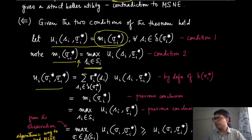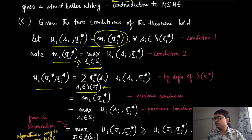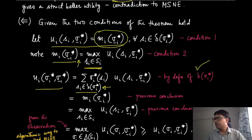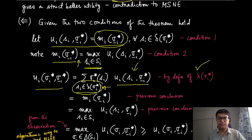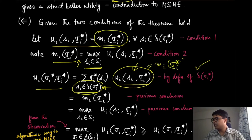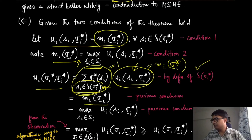We write the utility of (σᵢ*, σ₋ᵢ*) as a weighted sum over strategies in the support of σᵢ*, since for all other strategies σᵢ* assigns zero mass. Since all the utility values in the support are equal to mᵢ(σ₋ᵢ*), we can take that constant outside the summation. The remaining sum of probabilities equals one, so the expected utility of σᵢ* is simply mᵢ(σ₋ᵢ*).